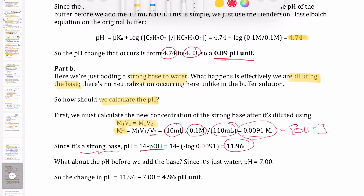Because this is a strong base, pH = 14 − pOH, which gives a pH of 11.96. Our starting pH was 7 (pure water is neutral). So by adding the same volume of sodium hydroxide, the pH jumped from 7 to 11.96 — a change of 4.96 pH units, compared to only 0.09 pH units in the buffer.